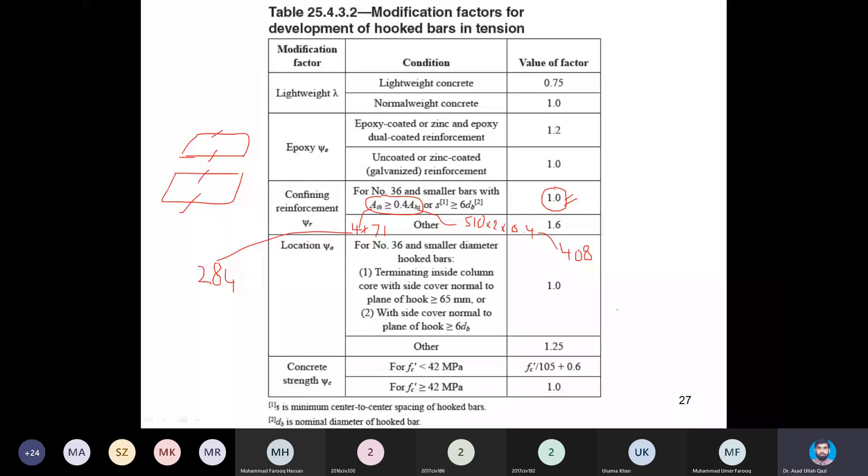This is quite important because normally in hook bars we want to develop them early within the column joint. If we are getting a big demand and we are unable to develop them within the joint, then we will be in trouble because we want to get them healed at the face of the support. This is the brief review of this article.